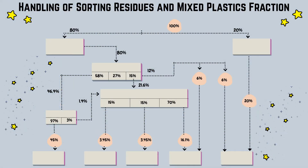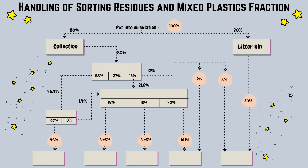Handling of sorting residues and mixed plastics fraction: put into circulation represents 100%, divided into 80% for collection and 20% for the litter bin, with the full 20% going to waste incineration (MSWI). From collection, sorting breaks down into four sections: 46.4% for resorting, 21.6% for resorting of mixed plastics fraction, and the remaining 12% split between cement plant and waste incineration (MSWI) respectively.